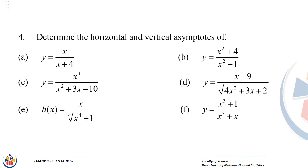Here are some exercises asking you to find both horizontal and vertical asymptotes. Recall the requirements for each: for vertical asymptotes you check where limits give infinity, and for horizontal asymptotes you take limits as x approaches infinity. Please work on these problems.